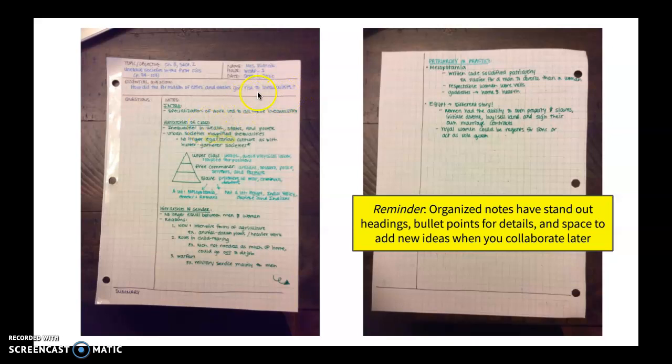So how do the formation of cities and states give rise to inequalities? And I really have three parts here. I have the inequality or hierarchy of class, hierarchy of gender, and then what it looked like for patriarchy in practice. So those three things should help me then answer that essential question.